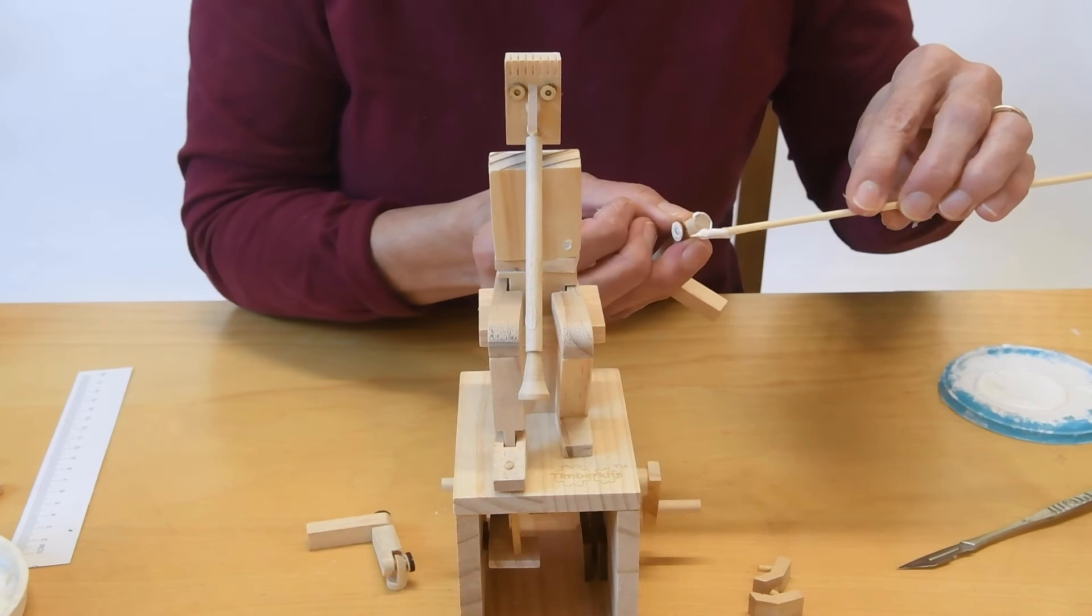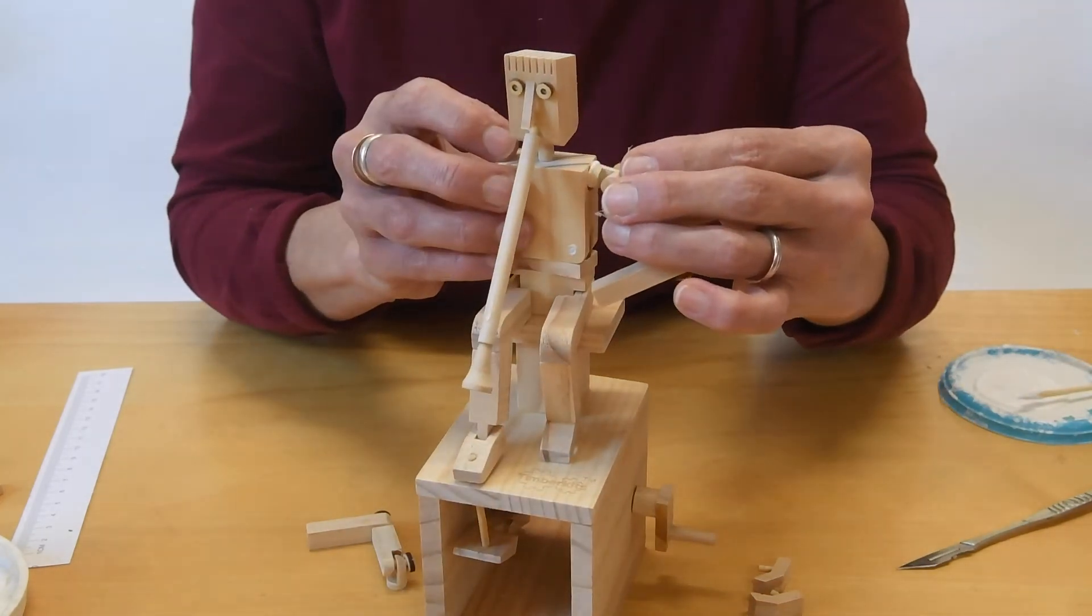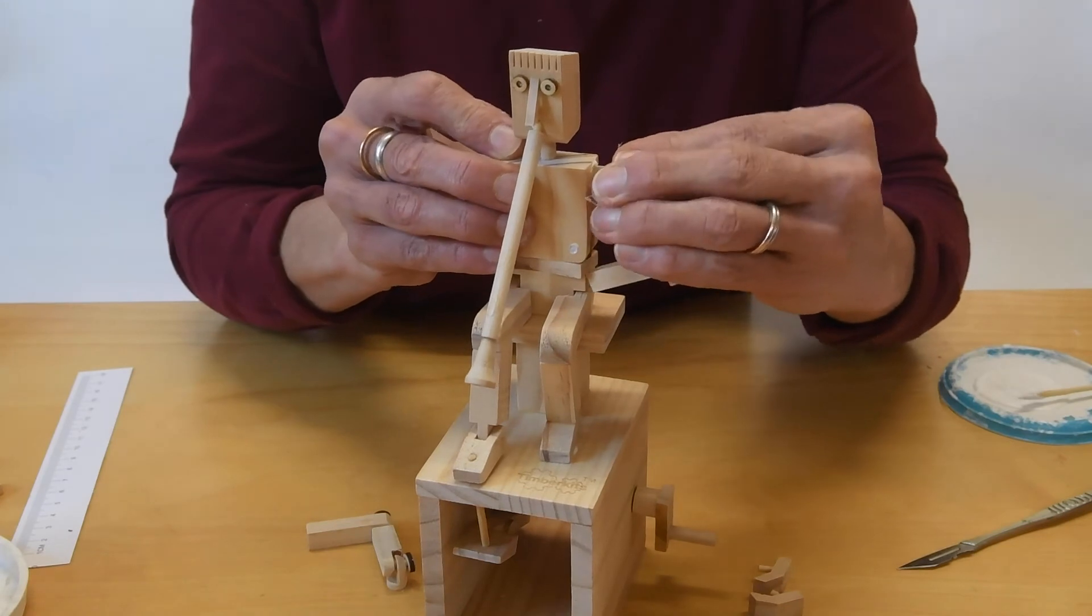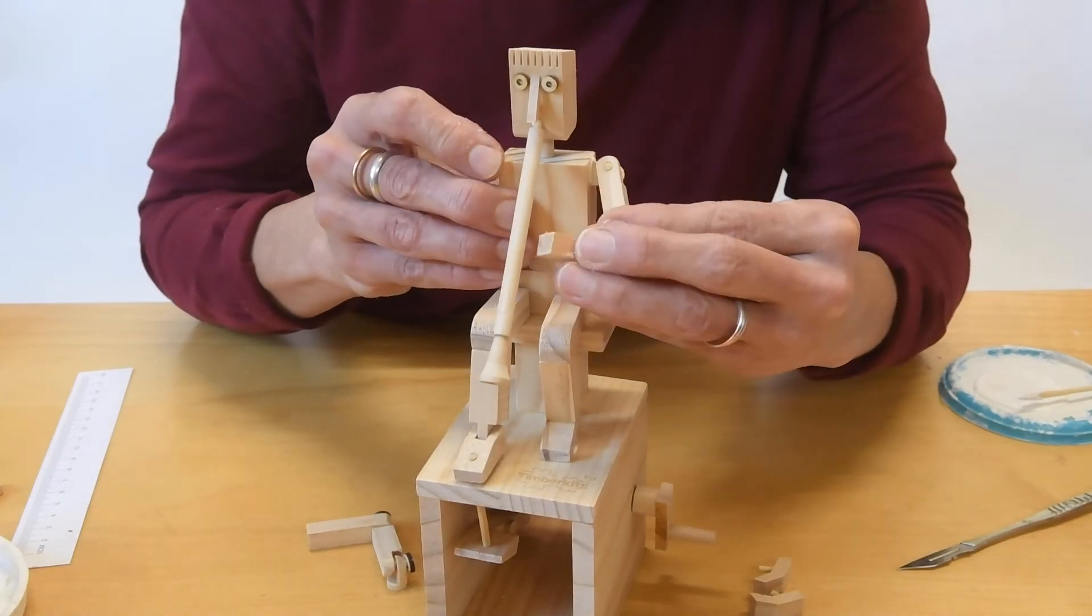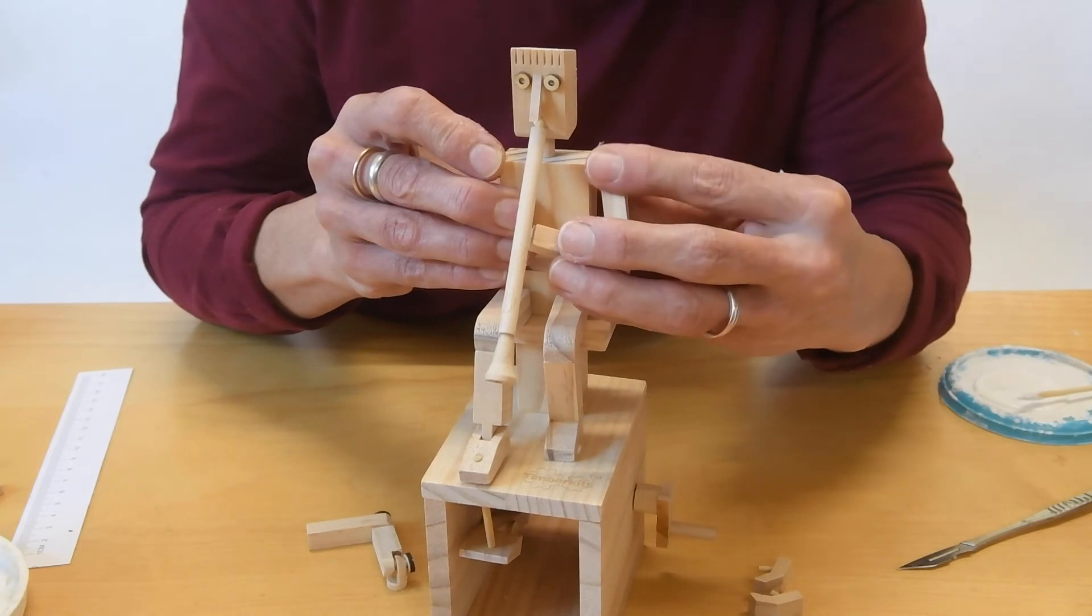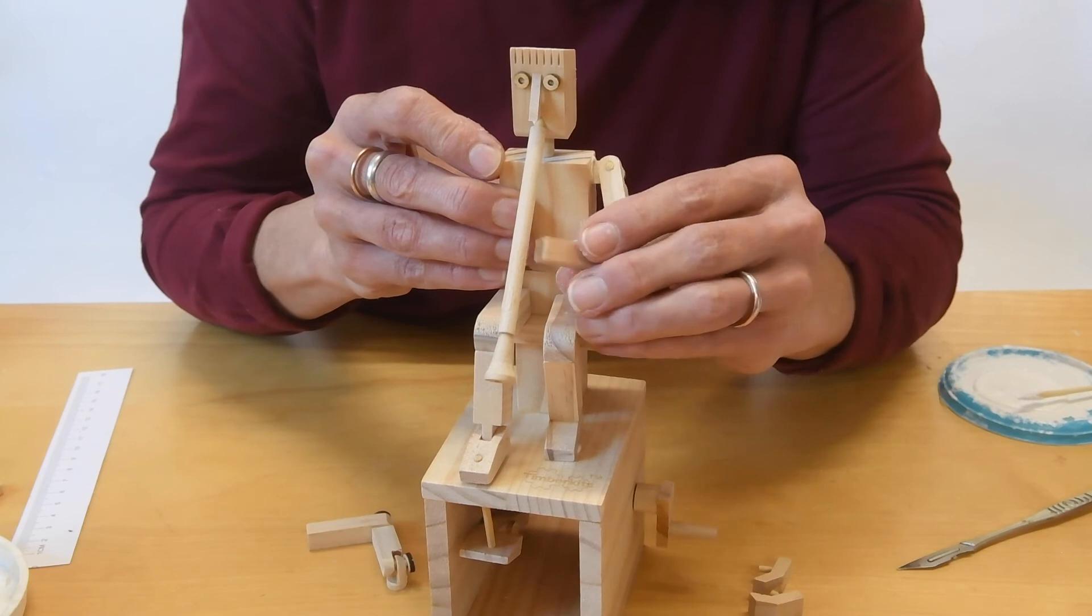Glue around the shoulder piece. That goes in the hole there. I'm just going to twist the shoulder a little bit until I've got his arm vaguely where I think it needs to be.